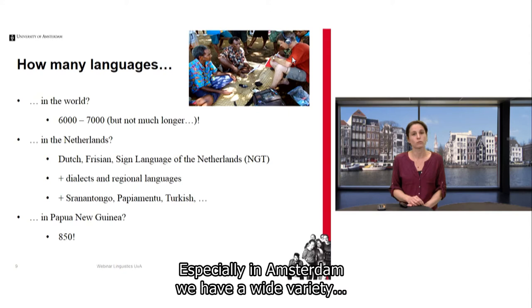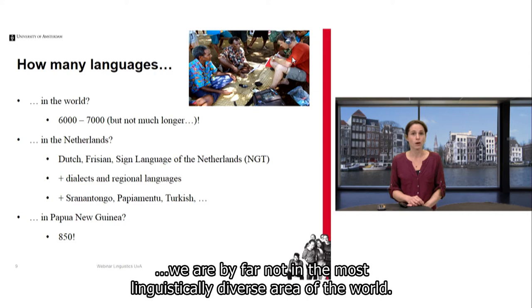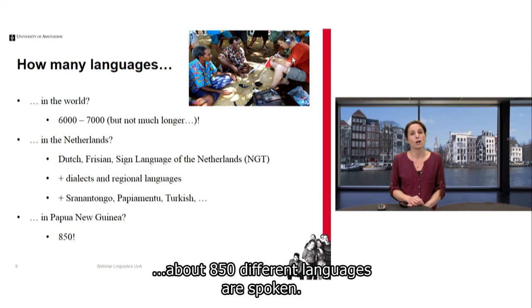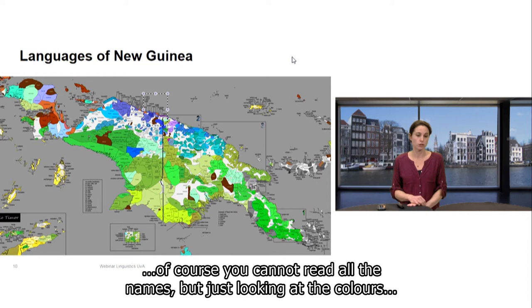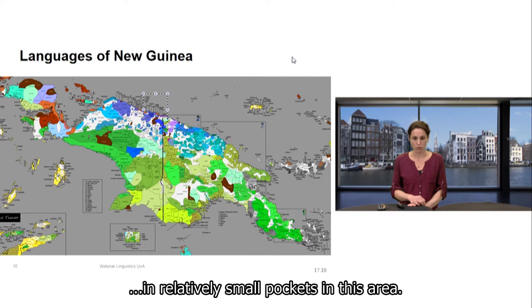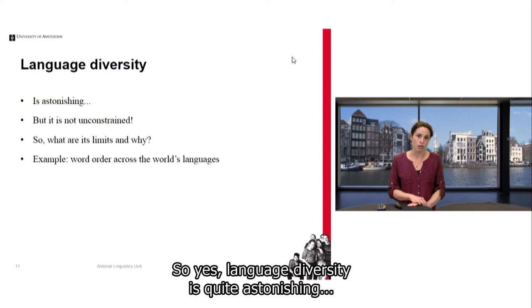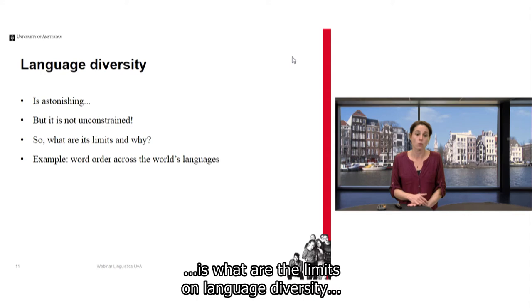Especially in Amsterdam, we have a wide variety of cultural and corresponding linguistic diversity. Even though this is interesting, we are by far not in the most linguistically diverse area of the world. In Papua New Guinea, for instance, about 850 different languages are spoken. Looking at a map of New Guinea, just looking at the colours, you can immediately see that many different languages are spoken in relatively small pockets in this area. Language diversity is quite astonishing, but it is certainly not unconstrained — not everything is possible in languages. One of the main questions linguists are interested in is: what are the limits on language diversity, and why do these factors pose these limits? I will illustrate this with an example on word order across the world's languages.